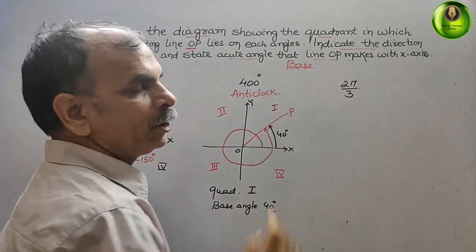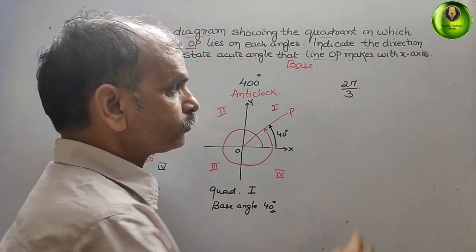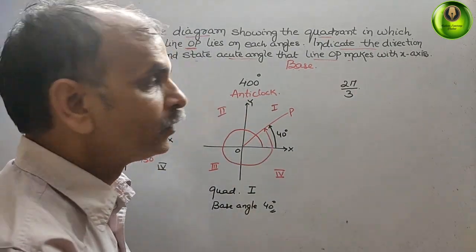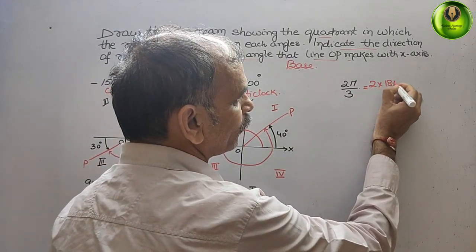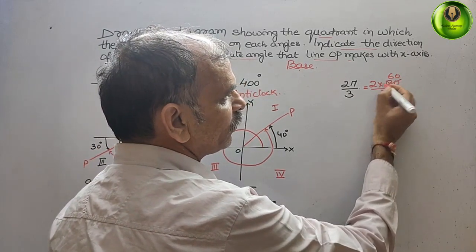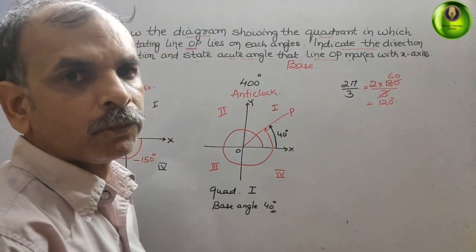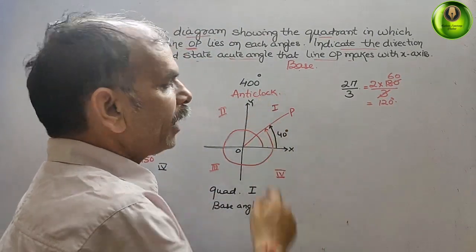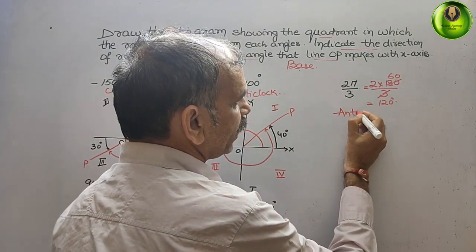Next, 2π/3. Pi means 180 degrees, so 2π/3 equals 2 times 180 divided by 3, which gives 120 degrees. Since 120 degrees is positive, the rotation is anticlockwise.